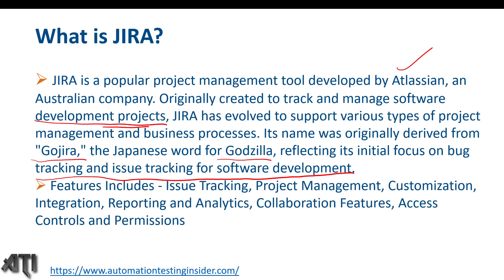The different features inside Jira include: issue tracking, project management, customization, integration, reporting and analytics, collaboration features to work with different stakeholders, and access controls and permissions — where we can give access permissions to particular teams or users, whether QA, BA, or developer.